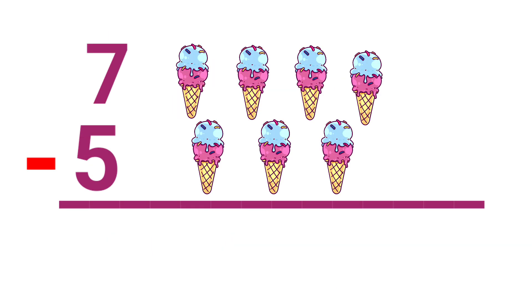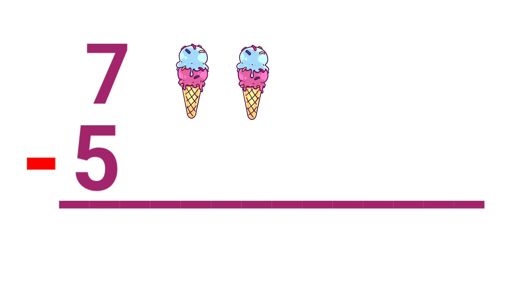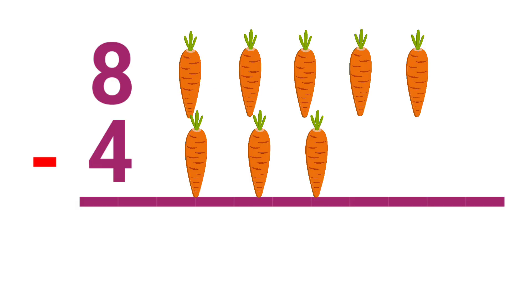Let's see some other examples. Here the sum is 7 minus 5. There are 7 ice creams. Let's count the ice cream. 1, 2, 3, 4, 5, 6, 7. In this 7 ice creams, 5 are melted. So the remaining ice creams are 2. So the answer is 2. 7 minus 5, the answer is 2. Let's do another example.